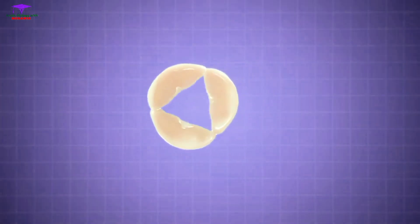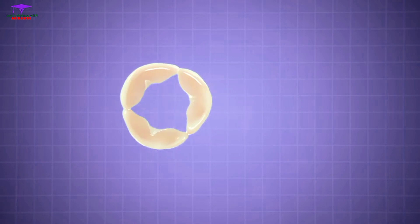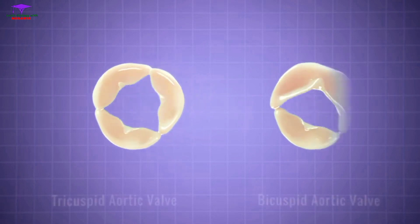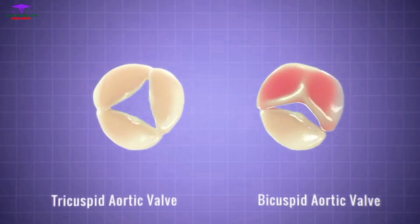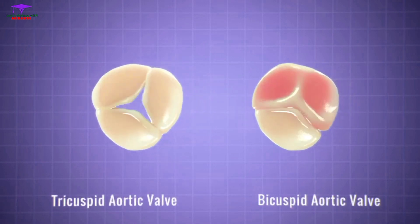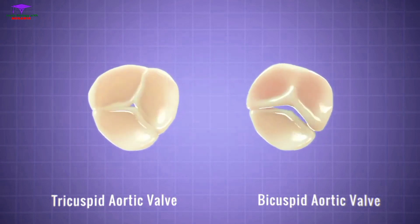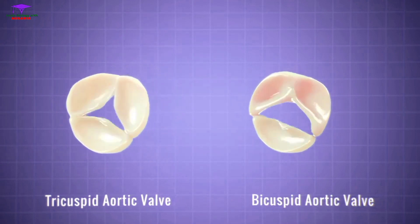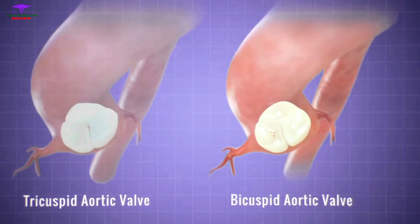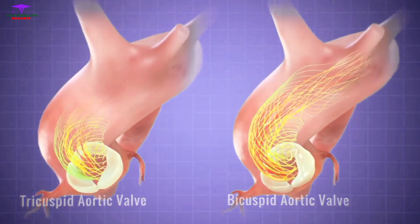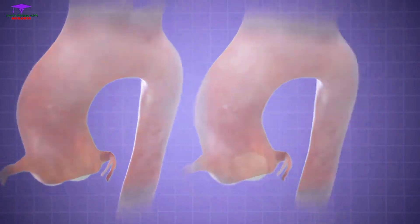About six million people in the U.S. are born with a condition called a bicuspid aortic valve, where two of the three cusps are fused together. While a bicuspid aortic valve functions in the same way as a typical tricuspid valve, slight differences in blood flow may lead to complications.